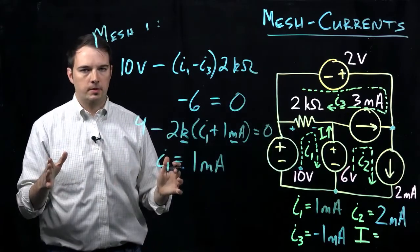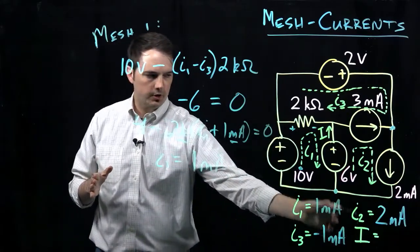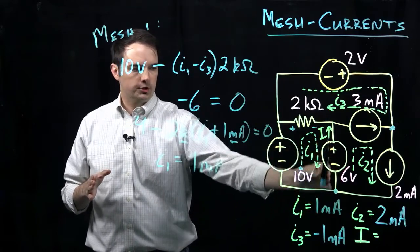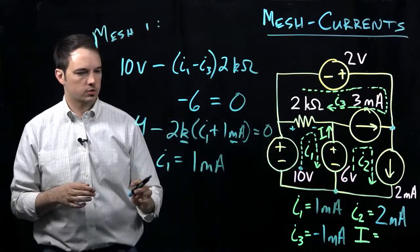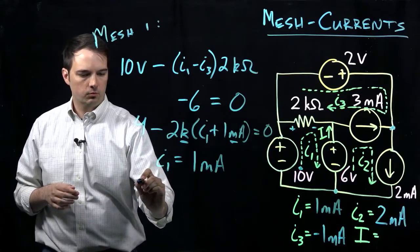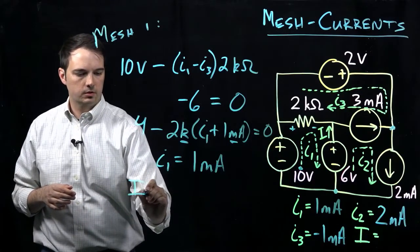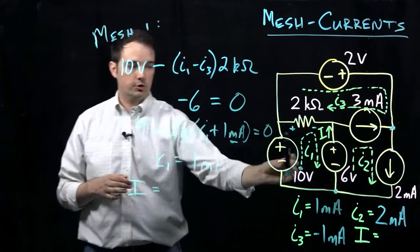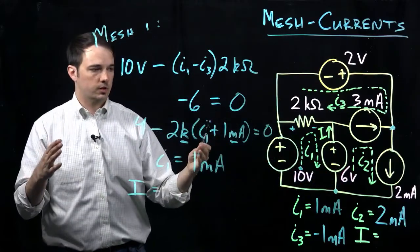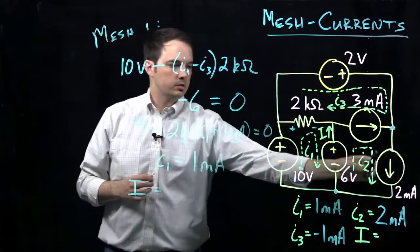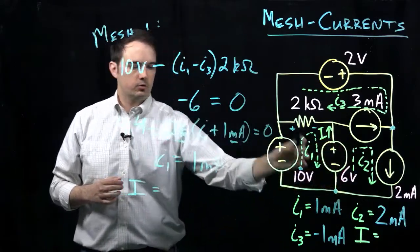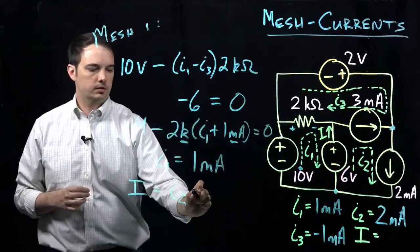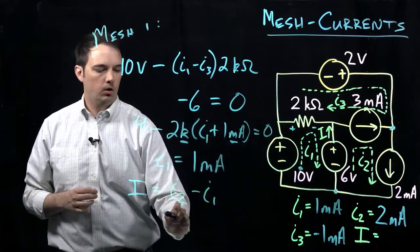So then the last part of this problem is looking at what this branch current I is, where I is indicated in the upwards direction through this 6 volt source. Hopefully you can write an equation to understand what that branch current I is as it relates to the two mesh currents that are influencing that branch. We have I2 going in that same direction, so that'll be positive, and whereas I1 is counteracting that, so it'd be minus I1.